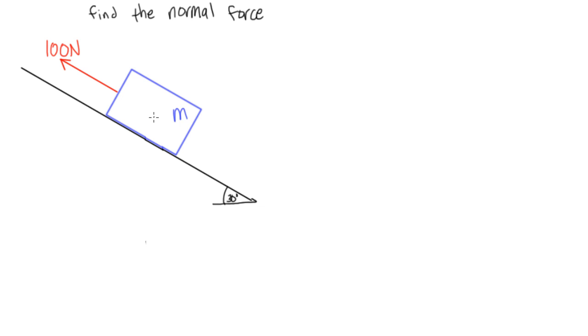So first of all, we have to draw in all of the vectors that we know for all of the forces. We already know that this situation is going to have 100 newtons pulling up in this way, but we don't actually know what the mass is yet, but we do know that its weight will pull down from the mass center.